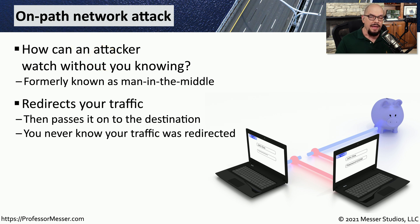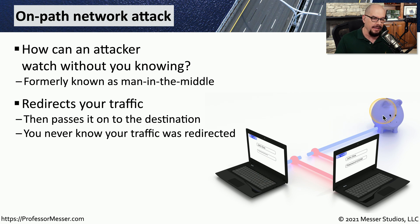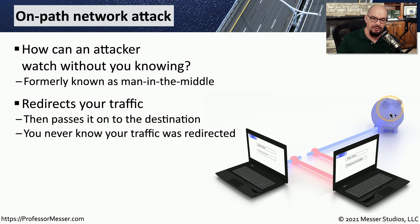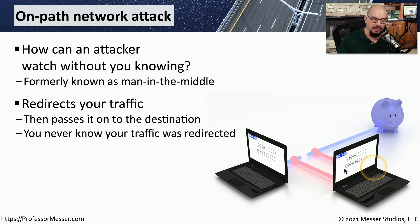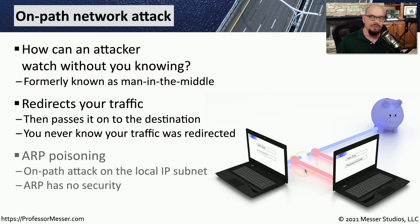An on-path attack works by having an attacker sit in the middle of the conversation, and they can redirect the traffic as you're sending it back and forth to another device. From your perspective, everything's working normally. You're sending information out to the web service, and the web service is sending information back to you. You have no idea that in the middle of this conversation is a third party who's intercepting that communication.